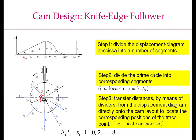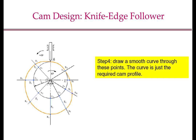We take distance S1 at phi 1, and on the line OA1 extended, we mark B1. Similarly, we take distance S2 and mark B2 at a distance S2 from A2 on the line OA2 extended. In the same process, we get B3, B4, B5, B6, B7. These Bi points will be the positions of the trace point as the follower moves in the anticlockwise direction. Now we draw a smooth curve through these points. This curve is the required cam profile.